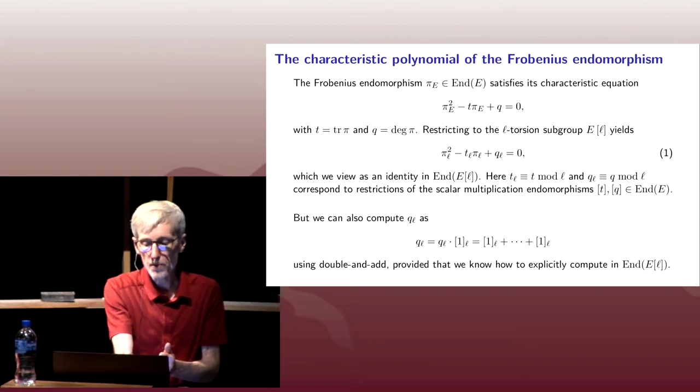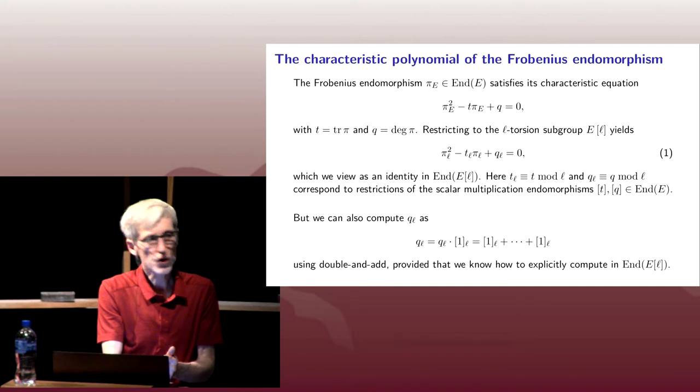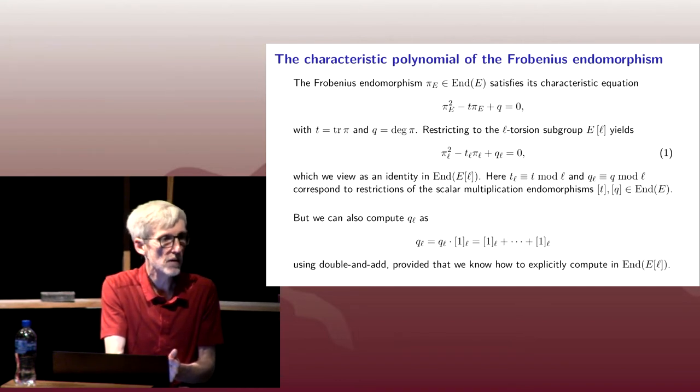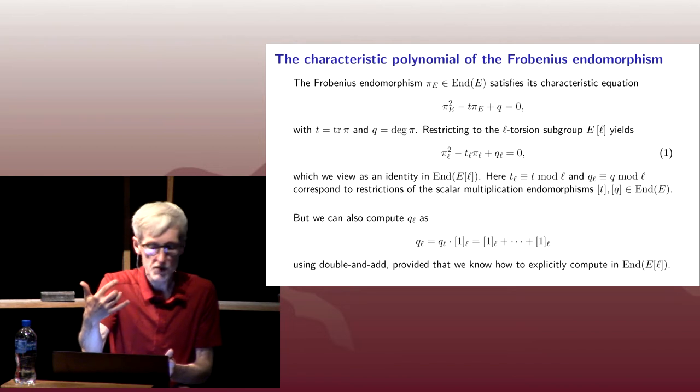So our strategy is to compute everything in that equation. One strategy would be compute everything in that equation and solve for t. An even simpler strategy is to realize that l is not that big. Let's just try every possible value of t. There's only l different scalar multiplication maps on the l-torsion.